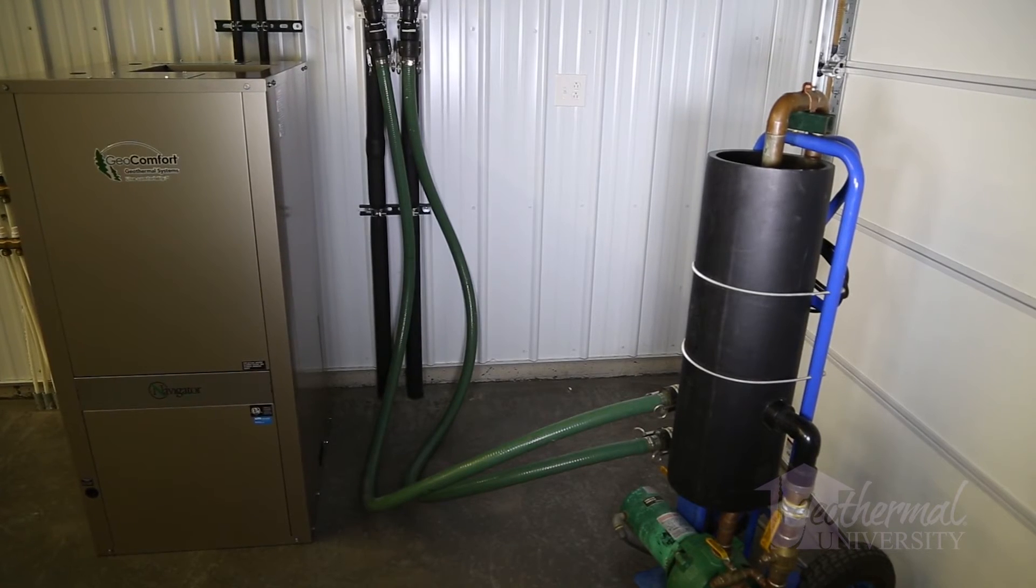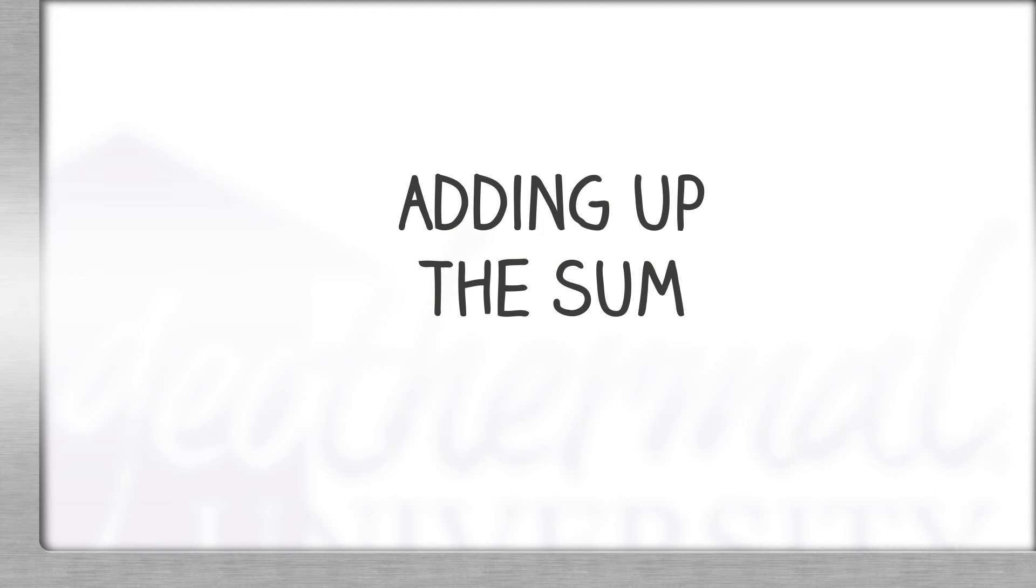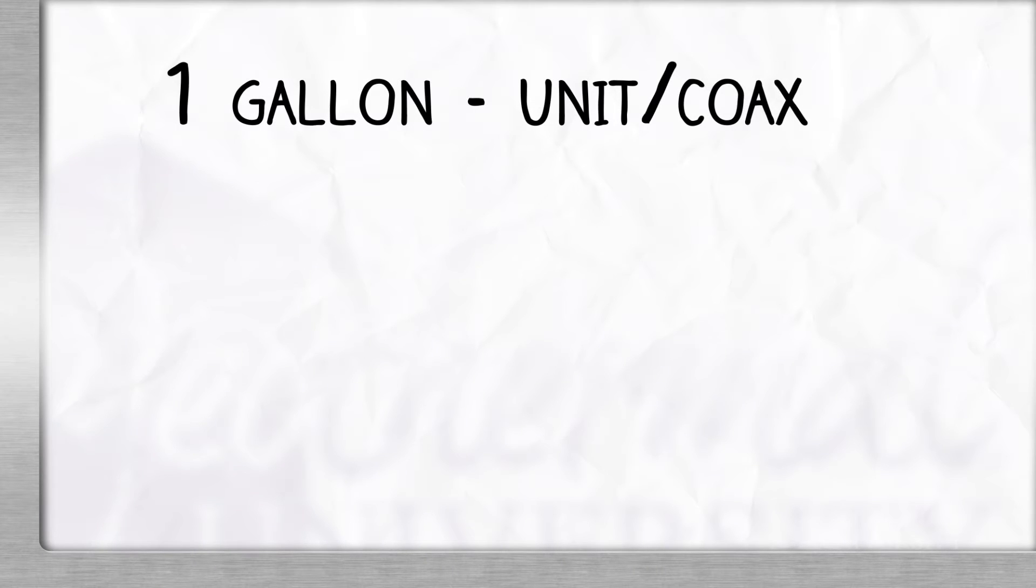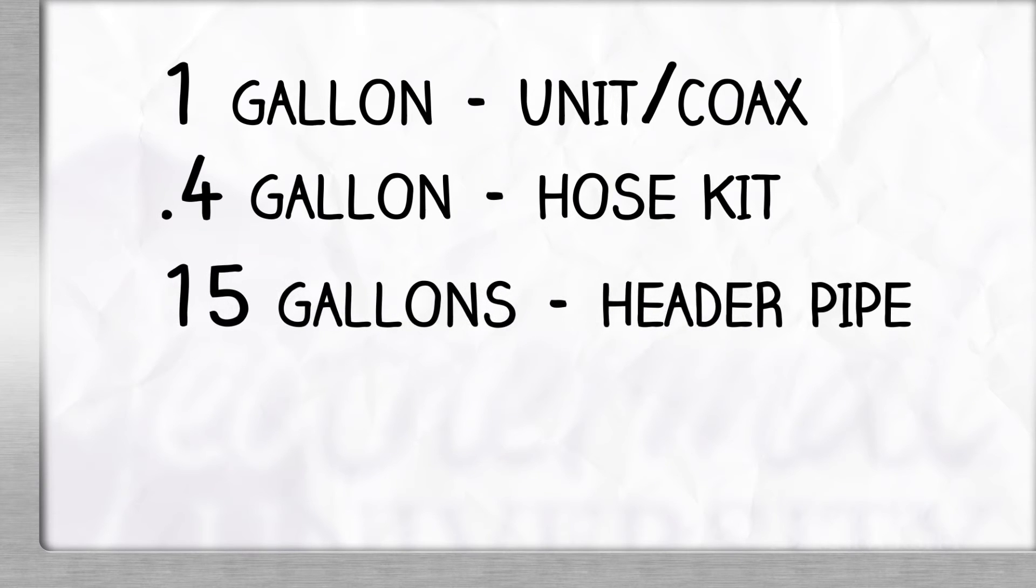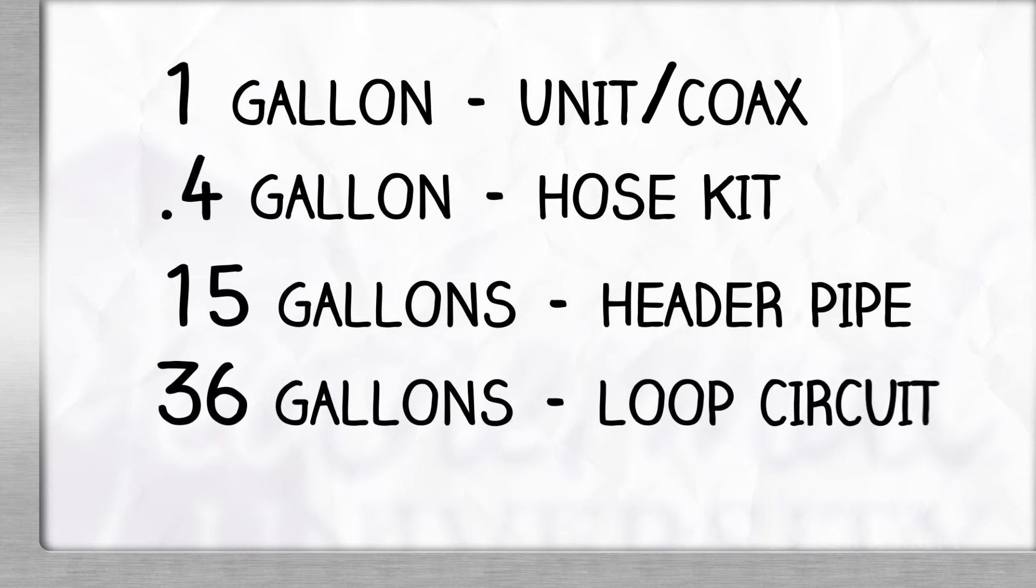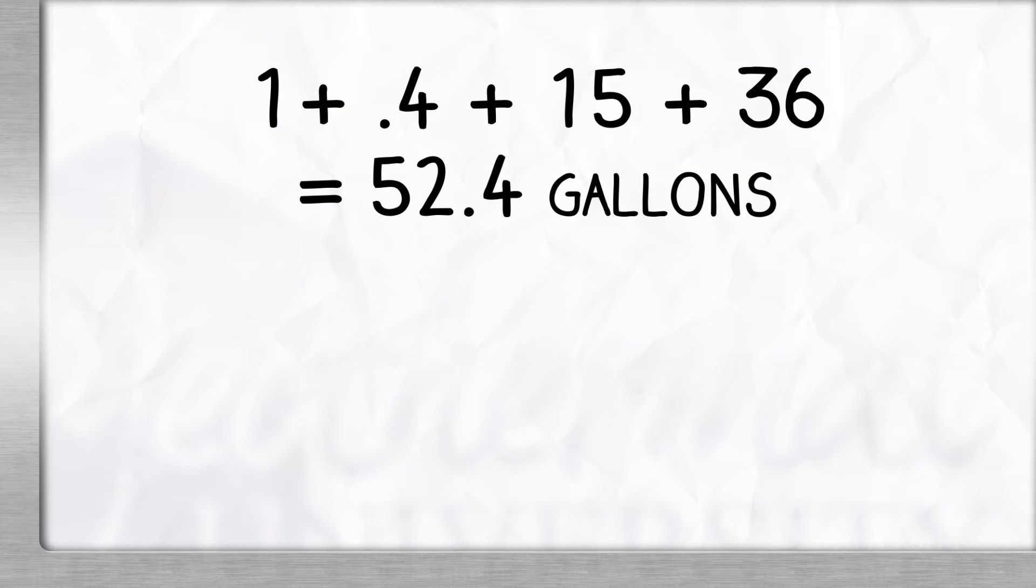Now that we have performed all the gallon to component calculations, we simply need to add up the sum. First, we have one gallon in the unit and coax. Second, we have 4 tenths of a gallon in the hose kit. Then we have 15 gallons in the header pipe. And last, we have 36 gallons in the loop circuits. So, our total is 1 plus 4 tenths plus 15 plus 36 equals 52.4 gallons.